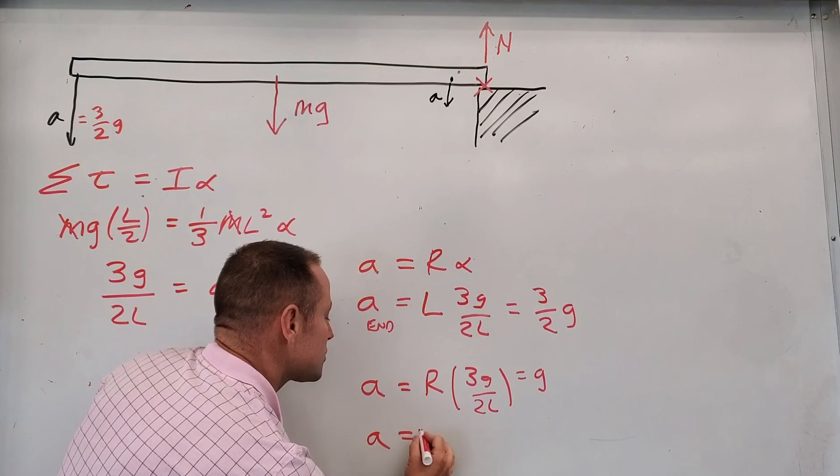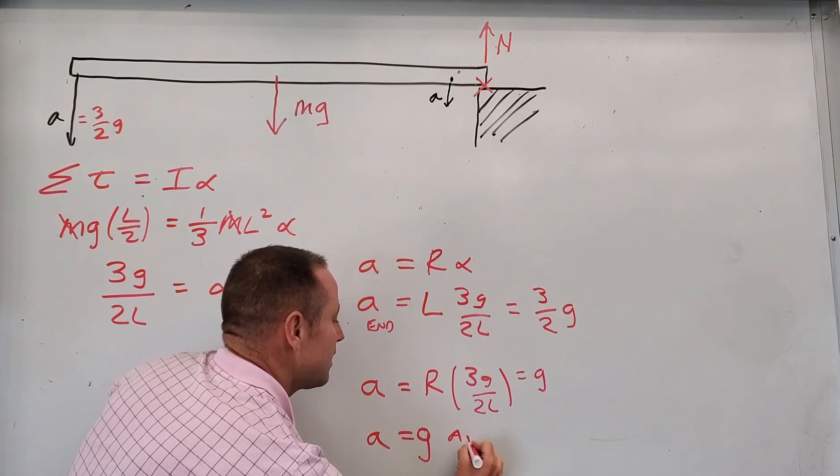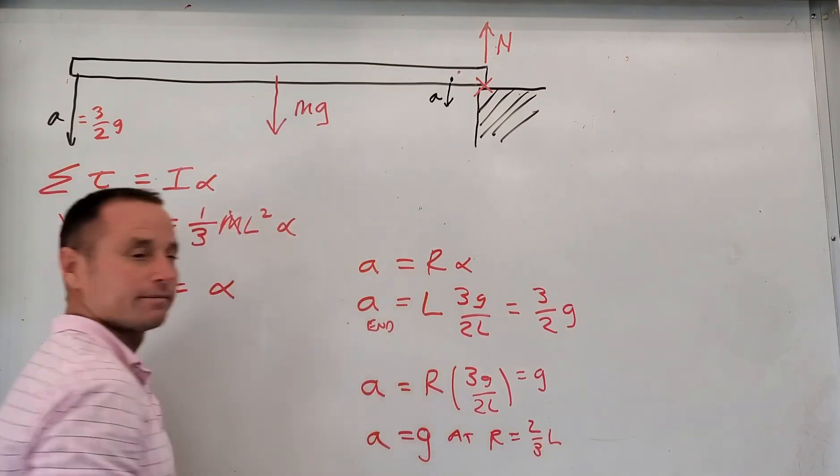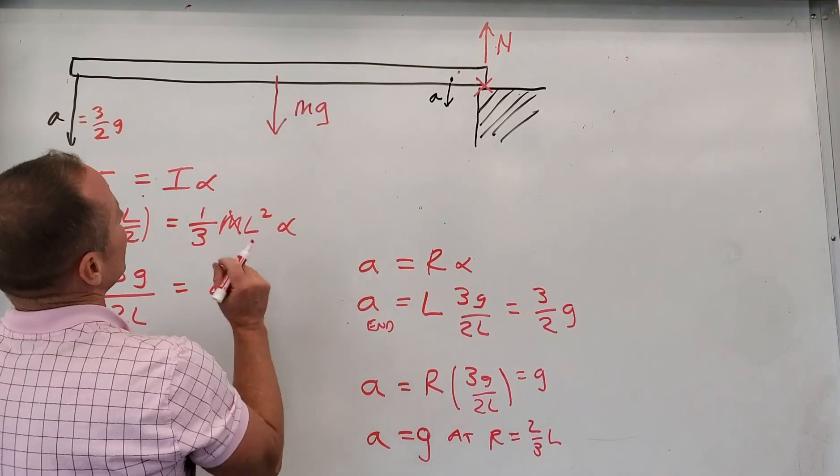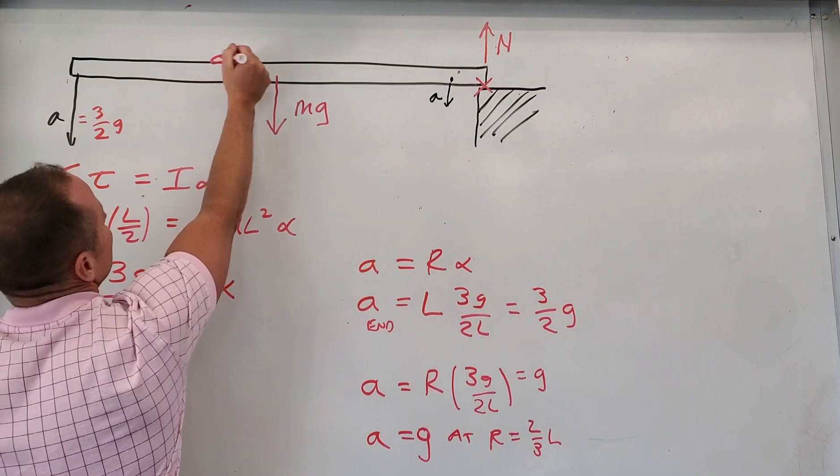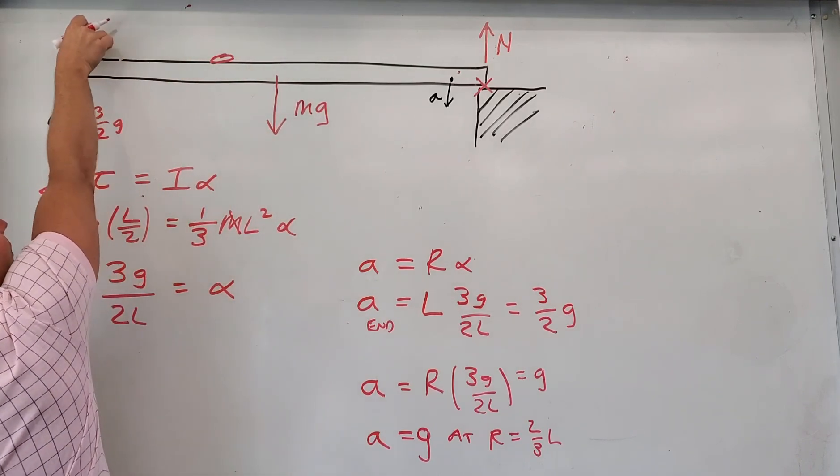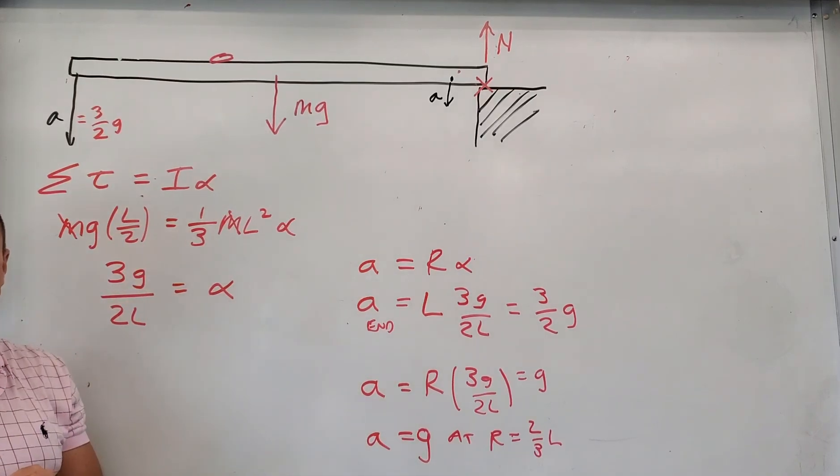So a equals g at r equals two-thirds of the length of the stick, and so that's why when we place the coin at two-thirds of the length of the stick it stayed on the stick, while these other coins that were further out actually got separated from the stick.